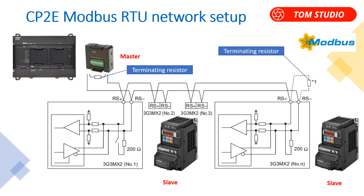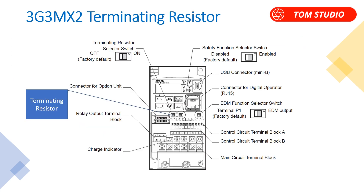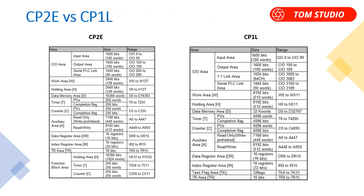To eliminate noise from the network, it is necessary to set up a terminating resistor at the first and last node devices. If the last node on the Modbus network is an Omron 3G3 MX2 VSD, you can simply turn on the terminating resistor on the VSD — no extra resistor needed. Please be aware that CP2e is quite different from CP1L. For example, CP2e W memory area is from W0 to W127, but CP1L memory area goes to W511. There are also many differences on PLC instructions, so on CP2e you cannot use existing CP1L function blocks — you must use new Modbus RTU function blocks designed for CP2e.